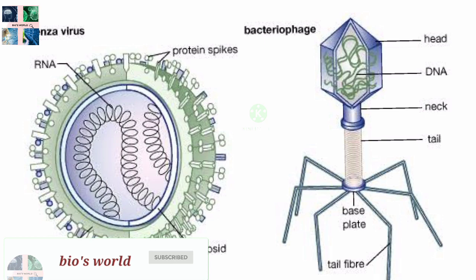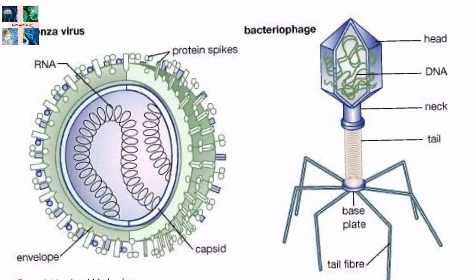Those lacking an envelope are called naked or non-enveloped viruses. In enveloped viruses, the nucleocapsid is surrounded by a lipid bilayer and glycoprotein derived from the modified host cell membrane. Enveloped viruses often exhibit a fringe of glycoprotein spikes, also called peplomers, in viruses that acquire their envelope by budding through the plasma membrane or another intracellular cell membrane.